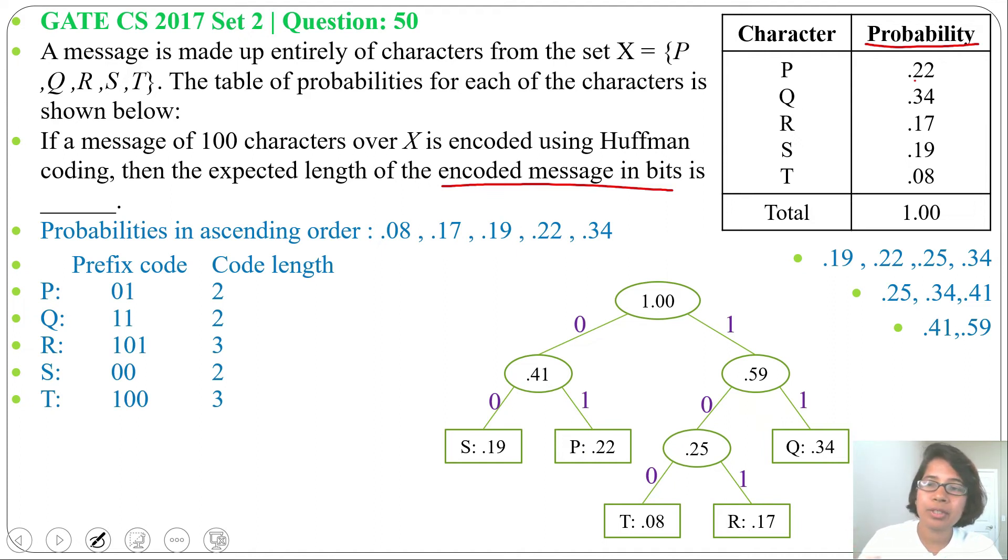find the exact frequency for each character. Like total 100 characters, 0.22 means 22 P are present, 34 Q are present, 17 R are present, 19 S are present, and 8 T are present. So you can directly multiply 22 with 2 plus 34 with 2 plus 17 with 3 plus 19 with 2 plus 8 with 3 and that will be the total encoded message in bits.